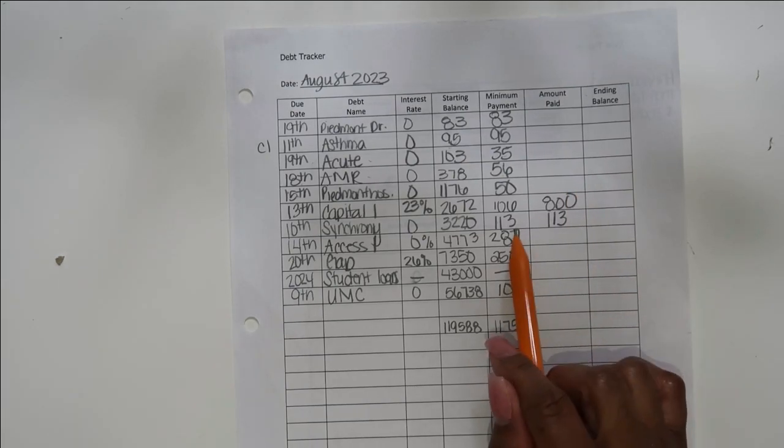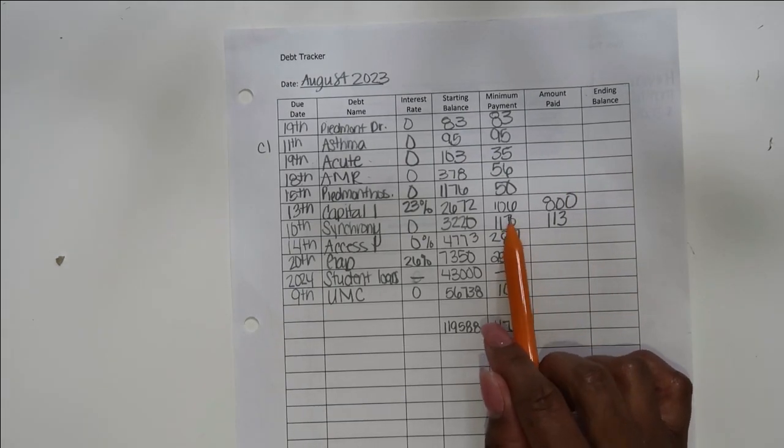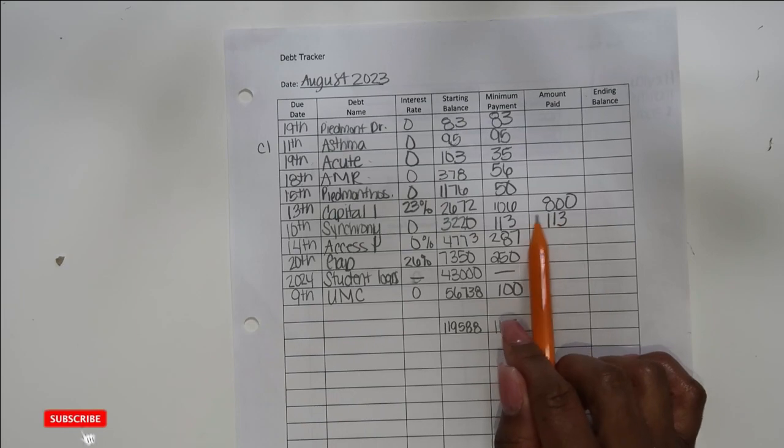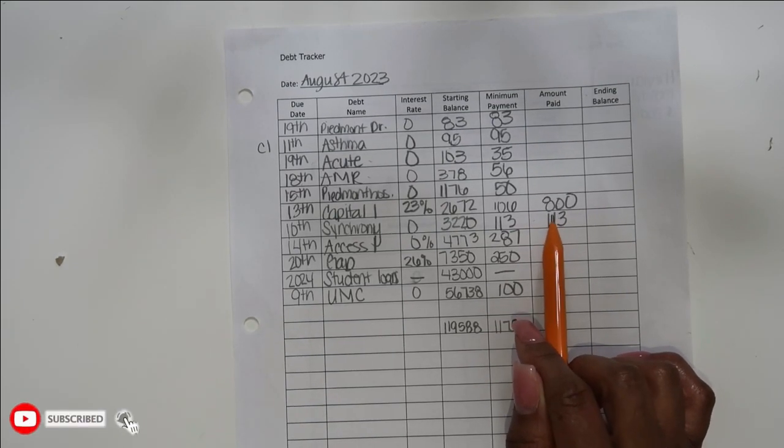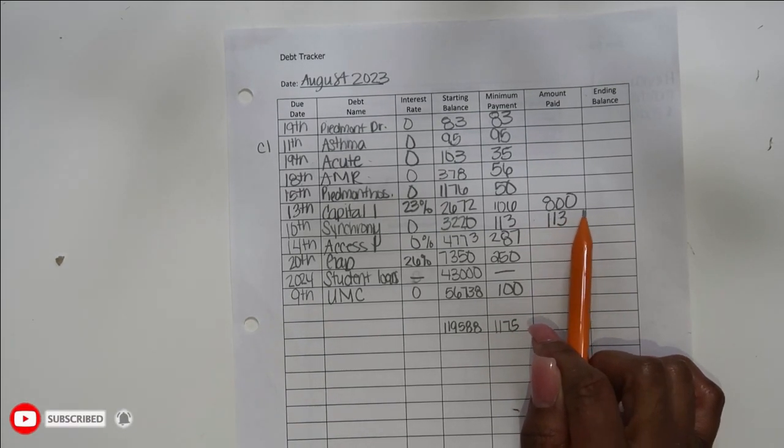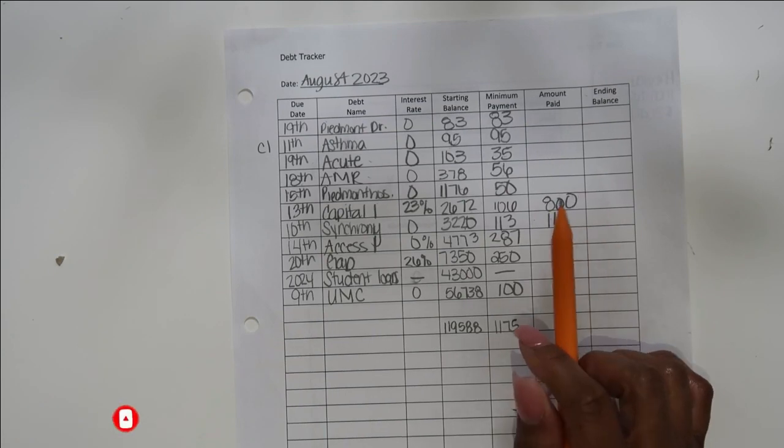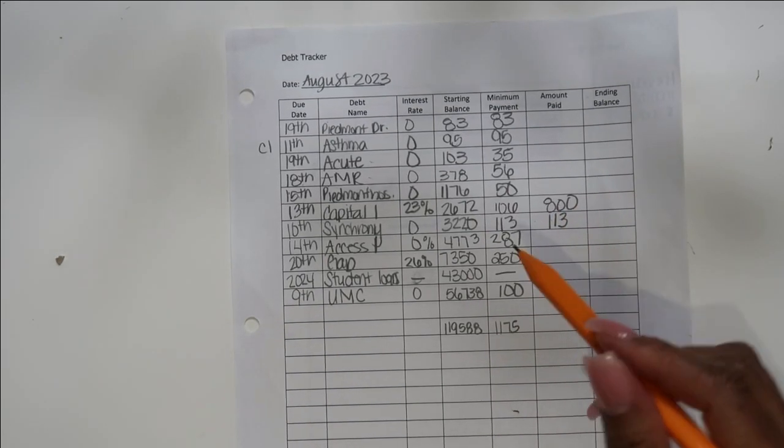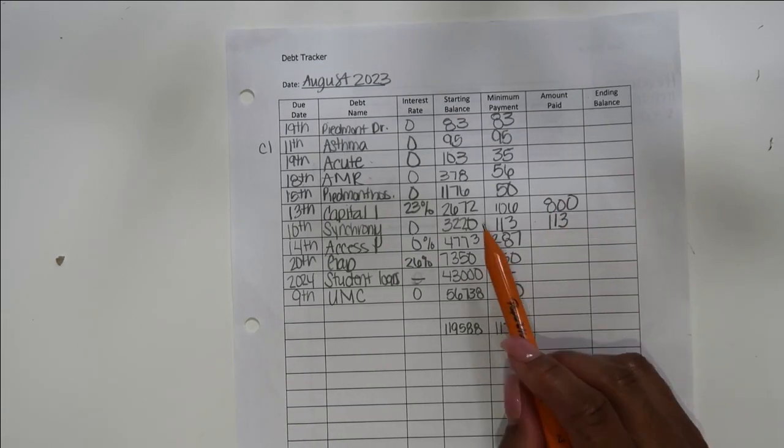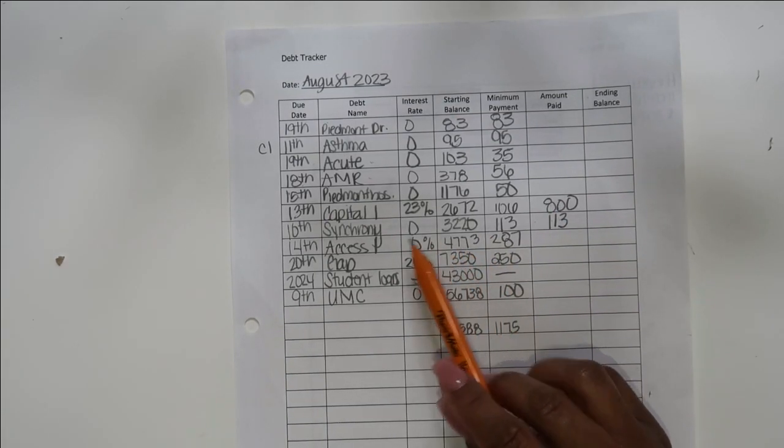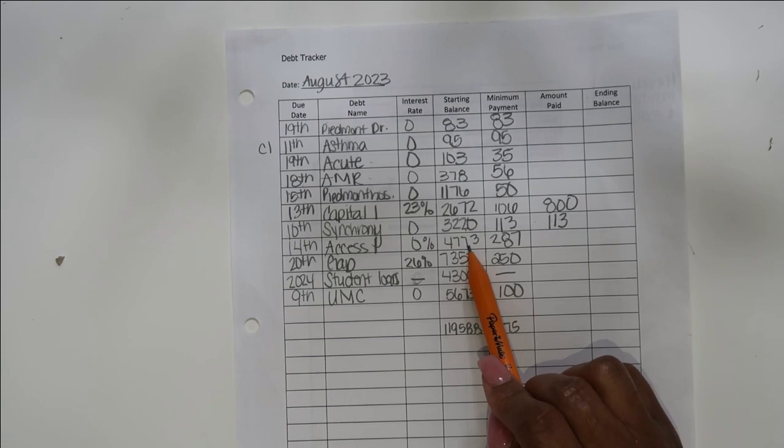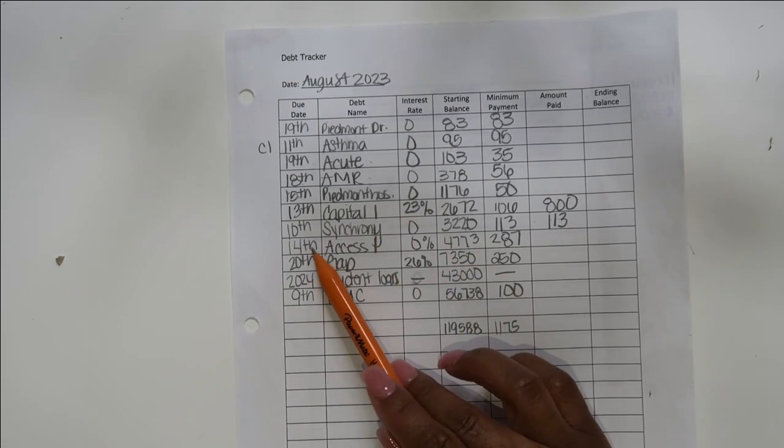Synchrony, $3,220. We bought a new refrigerator and stove, don't know if I ever told you guys that, but we did. I'm budgeting $113, that's what I'm going to pay. My husband also pays on it, so if he pays anything I'll put the amount that he pays like over in the corner so you'll know that wasn't me paying it, it was my husband paying it, but it still goes towards the debt.